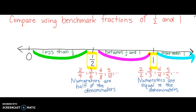Let's start with an example of two eighths. Where would two eighths be in comparison to one half or to one whole? When I think about two eighths, I look at my numerator — two — that is definitely less than half of my denominator. So two eighths would be somewhere in this area, less than one half. That tells me that two eighths is less than one half.